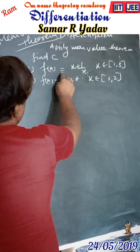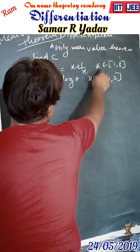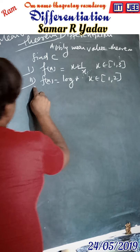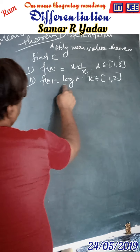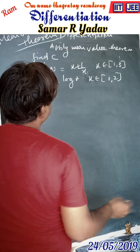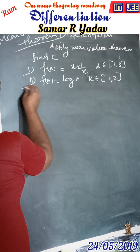The first problem: f(x) = x + 1/x, where x belongs to [1, 3]. The second problem: f(x) = log x, where x belongs to [1, 3]. We will solve the second one first.